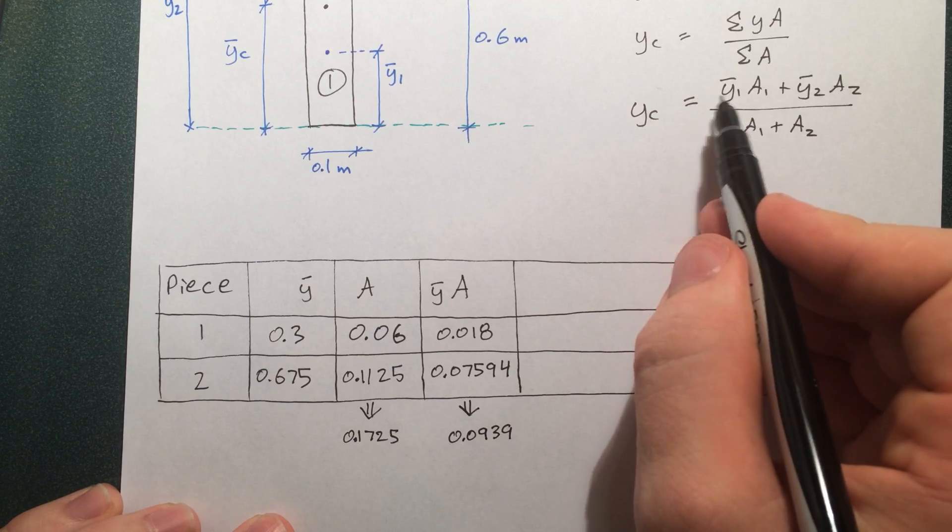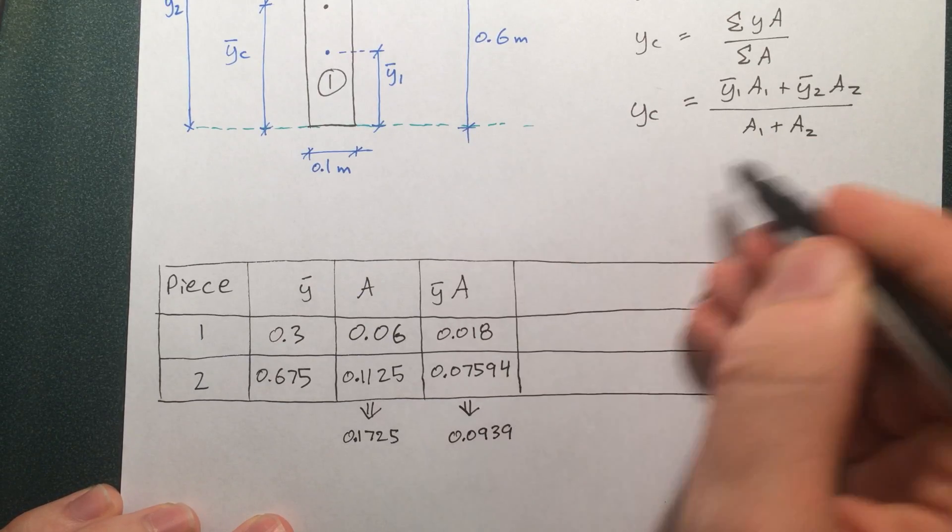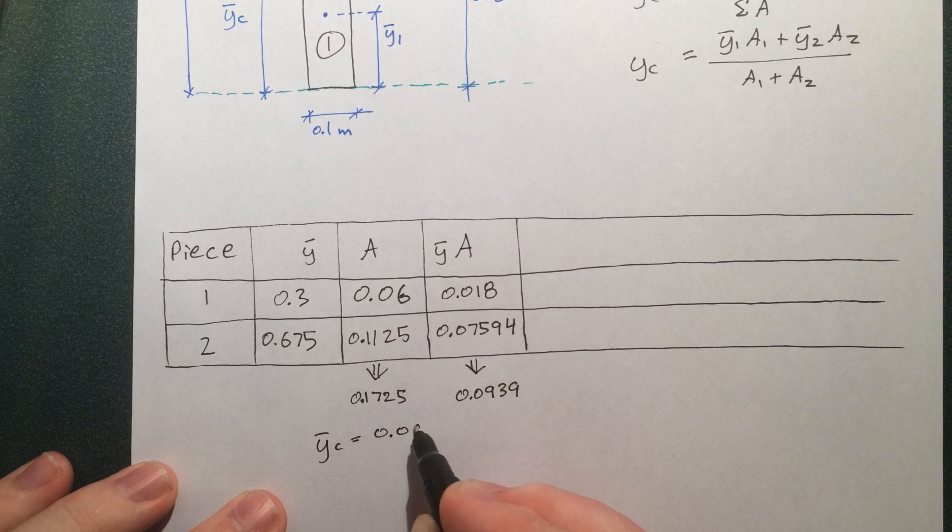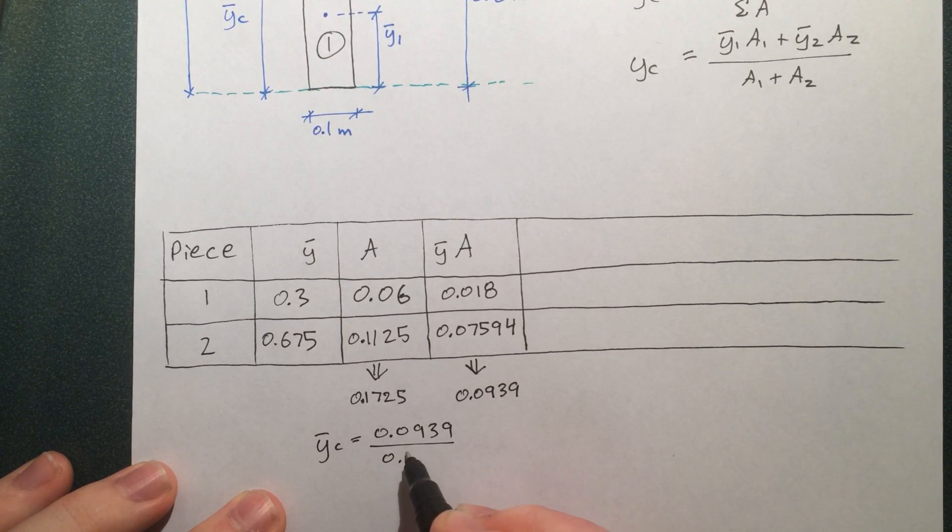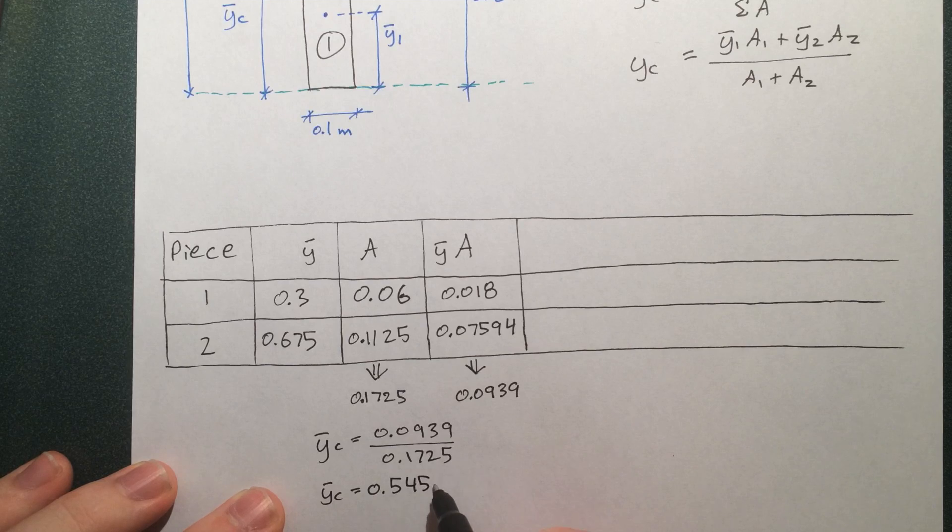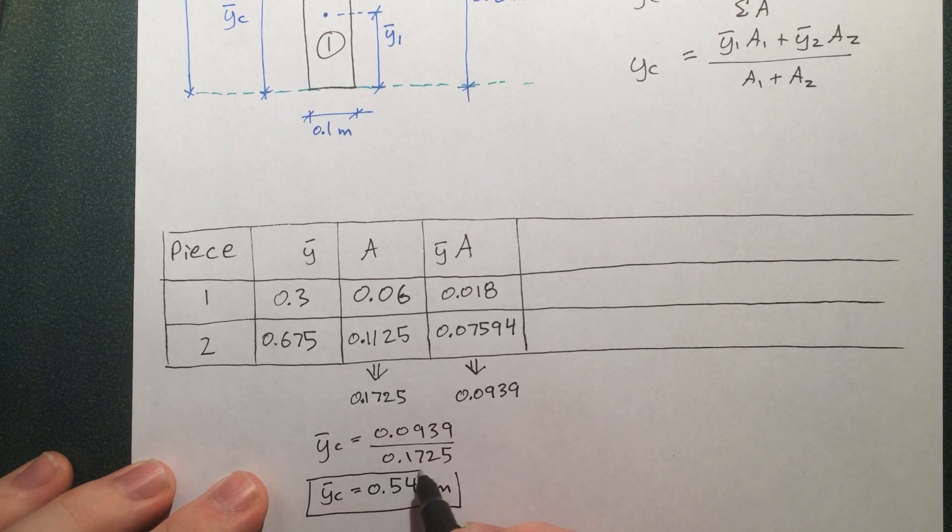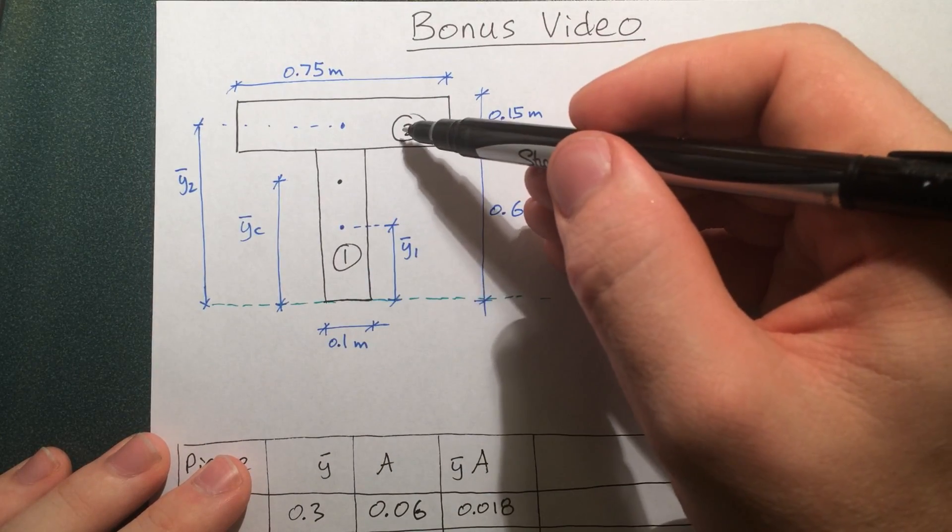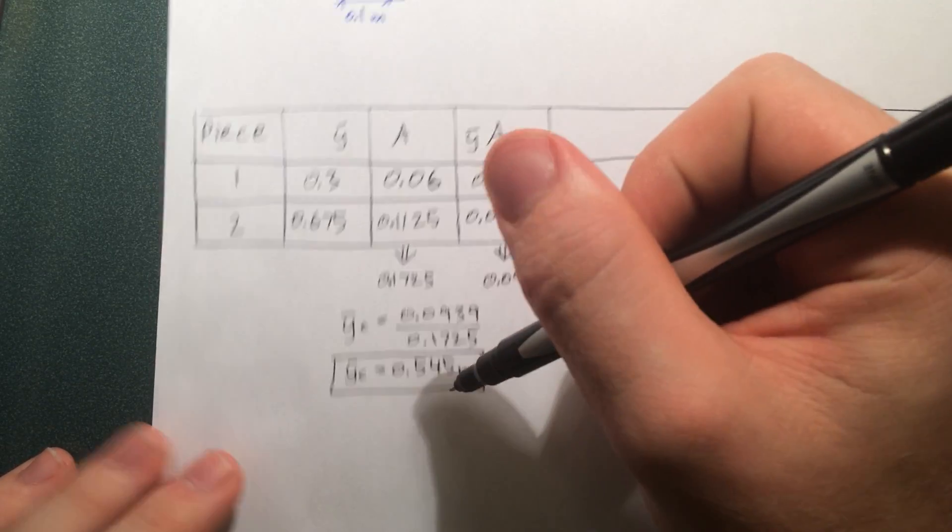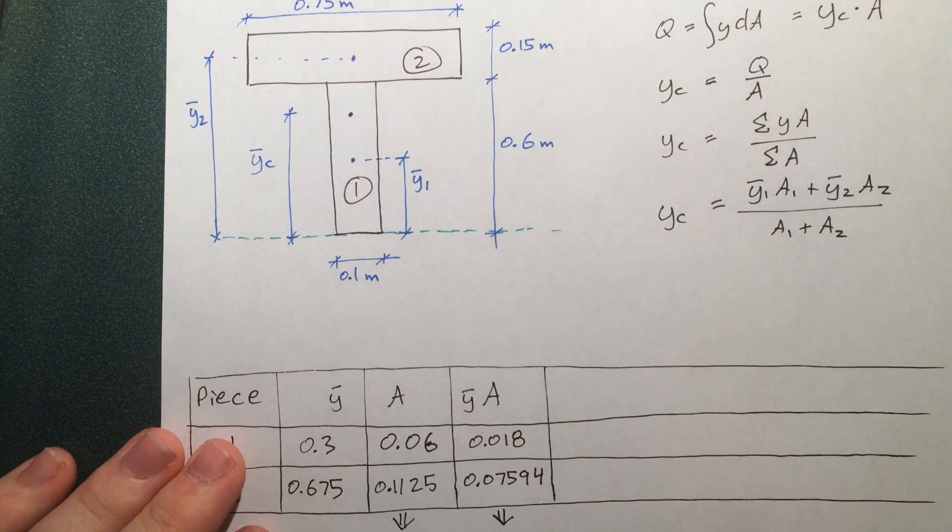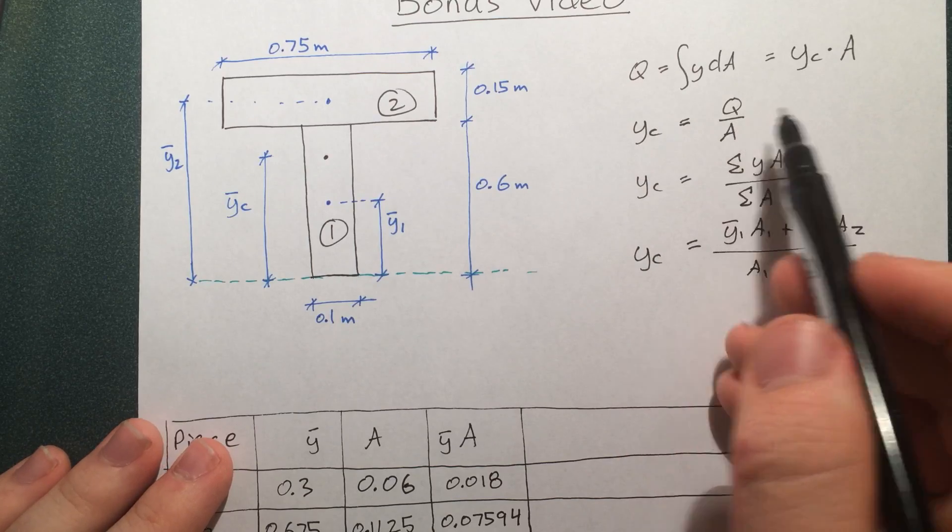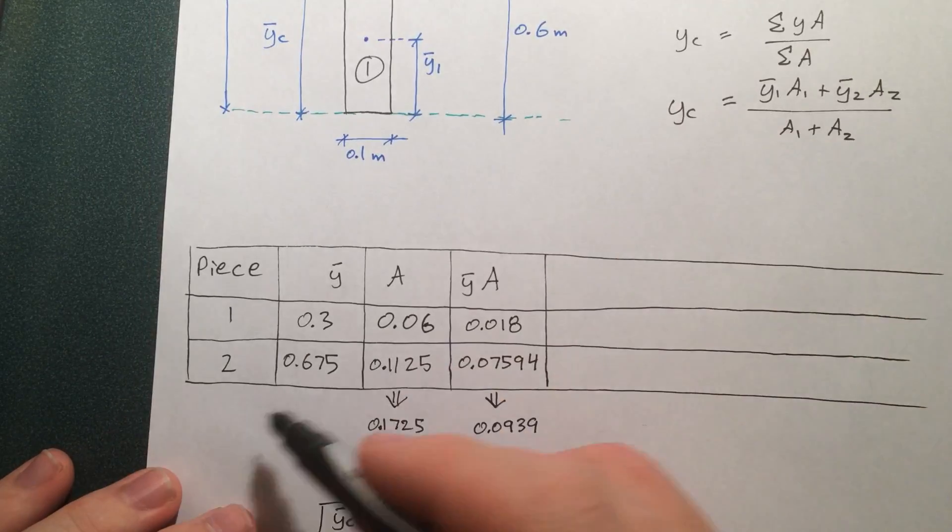So like we said, y of the centroid is basically the sum of y-bar A over the total area. We can write that out. This answer makes sense. We shouldn't expect the centroid of the whole thing to be up in this piece, and we shouldn't expect it to be below this centroid. It's at 0.545 up from the bottom, so that's about right. Basically what we did is we took Q of the overall piece to equal the Q of all the pieces, then we rearranged it. We had a nice table and solved.